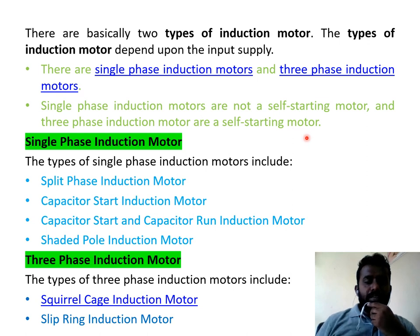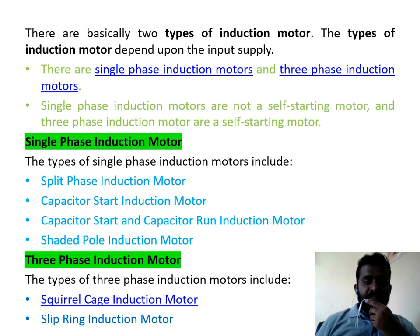Single phase induction motors are further classified as split phase induction motor, capacitor start induction motor, capacitor start capacitor run induction motor, and shaded pole type induction motor. Three phase induction motors are classified as squirrel cage induction motor and slip ring induction motor.